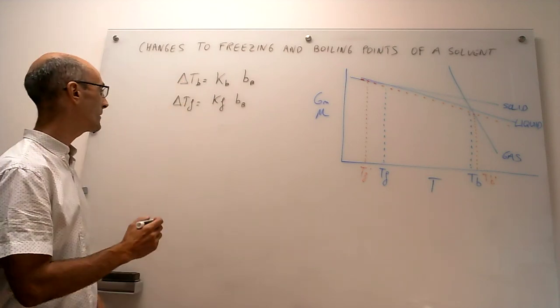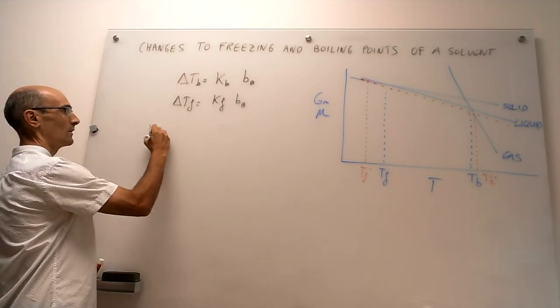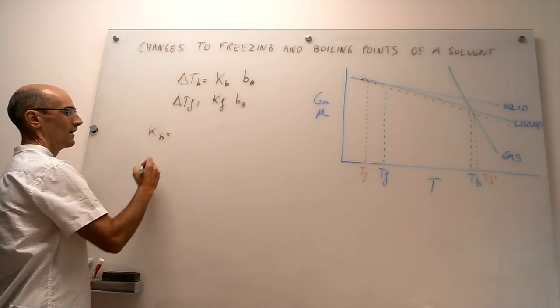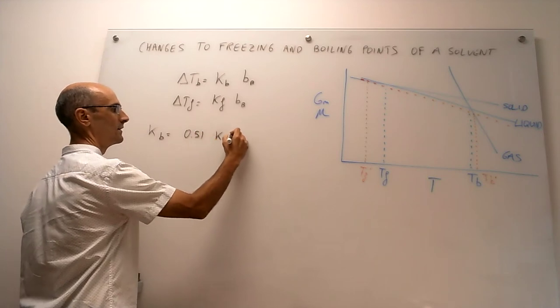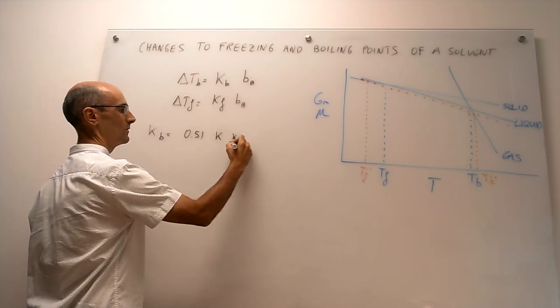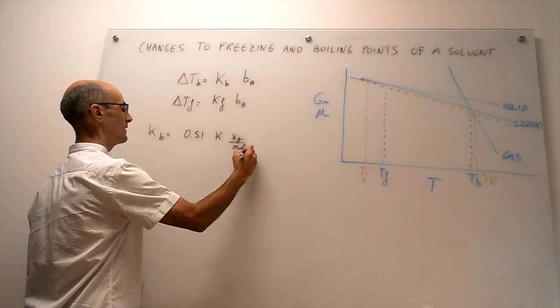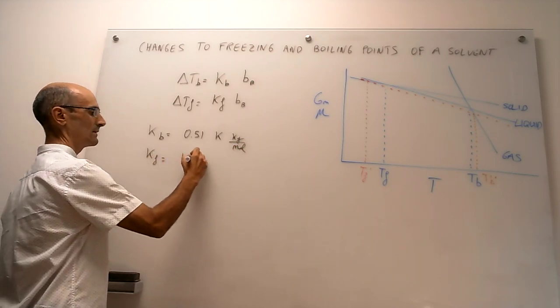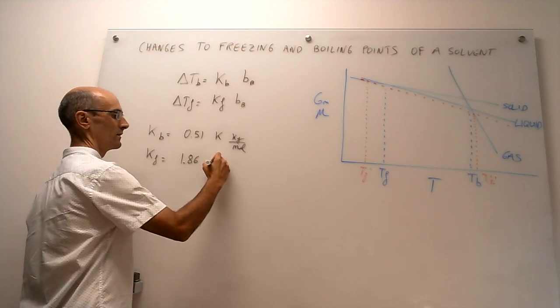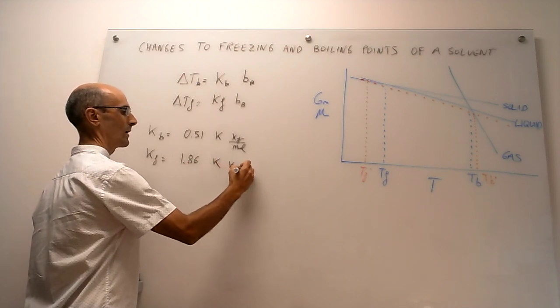And for example, for water, the ebullioscopic constant for water is 0.51 Kelvin kilograms per mole. And then the cryoscopic constant for water is about three times greater, 1.86 Kelvin kilograms per mole.